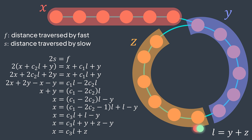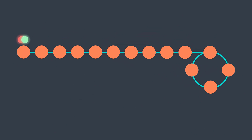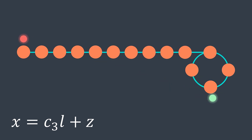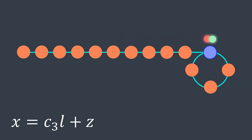Some may not be convinced by the c3·l part, but consider an example where z is smaller than x. After they meet, we take slow back to the head. Slow traverses x, while fast traverses z then keeps looping while waiting for slow to reach it — that's the c3·l part, it loops a certain number of times. You can see that they meet at the entry point of the cycle.